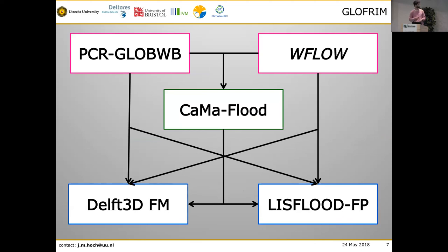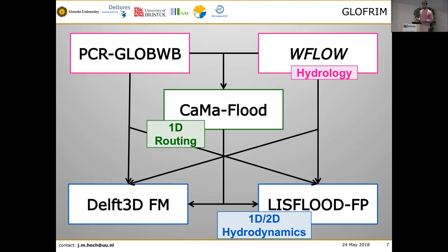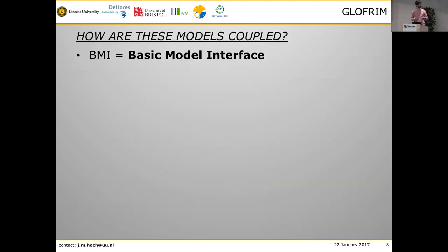The framework contains a set of BMI-enabled models where we implemented BMI adapters so they can be coupled within GLOFRIM. We have hydrologic models: PCR-Globe WB from the University of Utrecht — a global-scale hydrologic model — and also the W-flow suite, which contains many other hydrologic models like the HBV or SBM model. We recently added the global routing model CaMa-Flood. And it contains two 1D/2D hydrodynamic models: LISFlood-FP and Delft3D Flexible Mesh, both developed in the Netherlands.